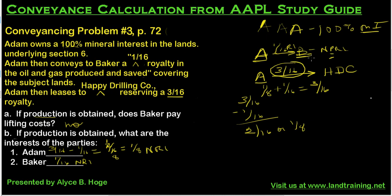Number four is going to change Adam's interest to a 50% mineral interest in the land, and we'll see what effect that has on what is conveyed and what the interests of the parties are. So stay tuned and we'll tackle the next one.